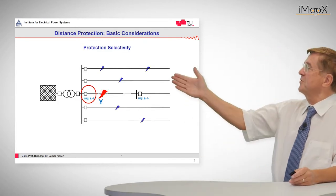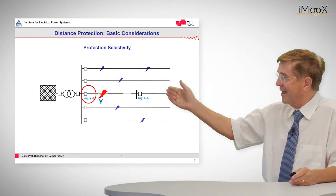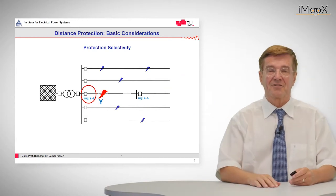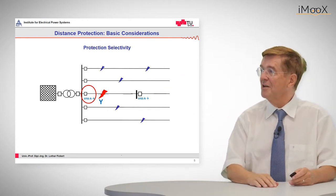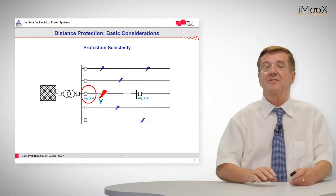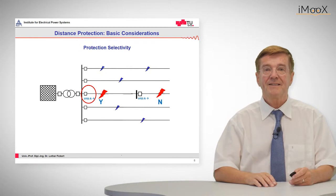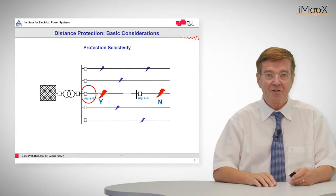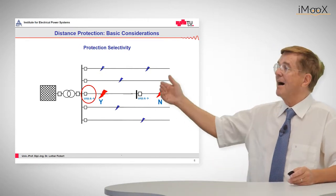So the job of distance protection is if we have a line in an electrical power system and there is a fault, we would like that this relay that is indicated with a red circle trips the fault and that it does not trip the fault for a fault that is behind this.